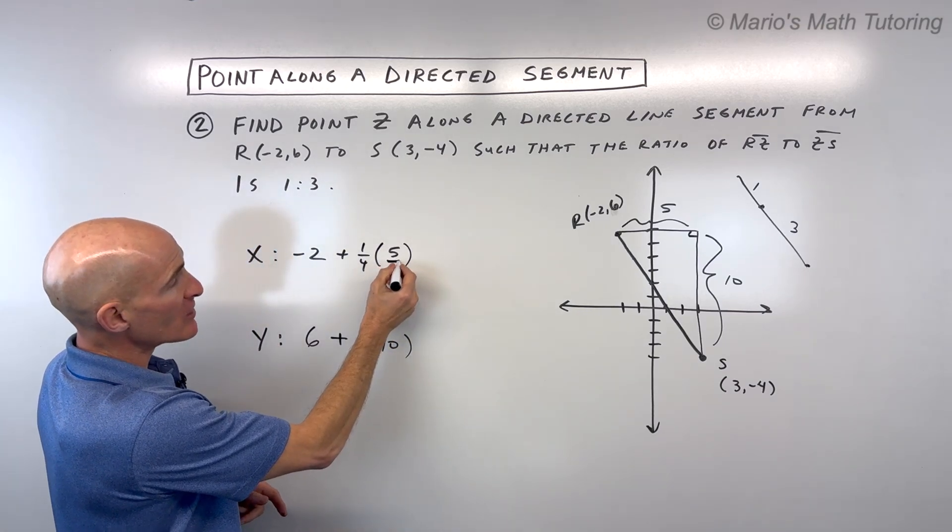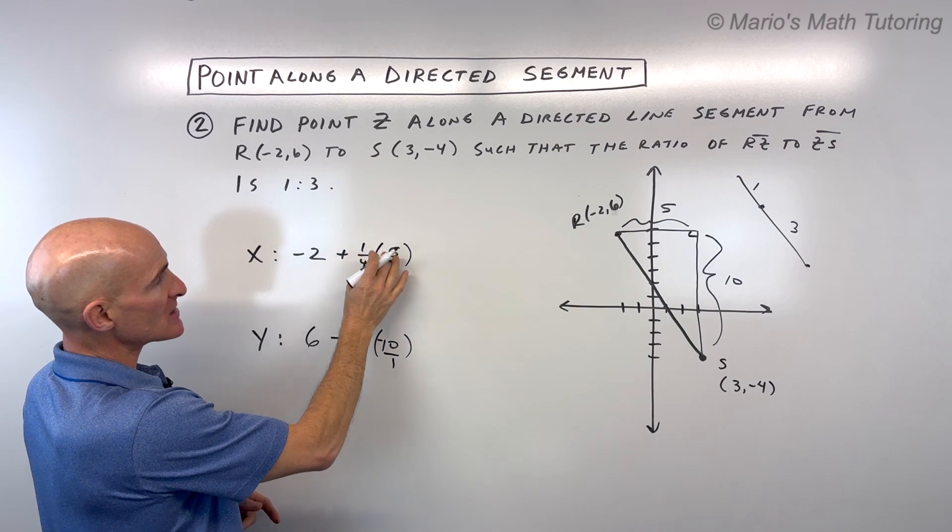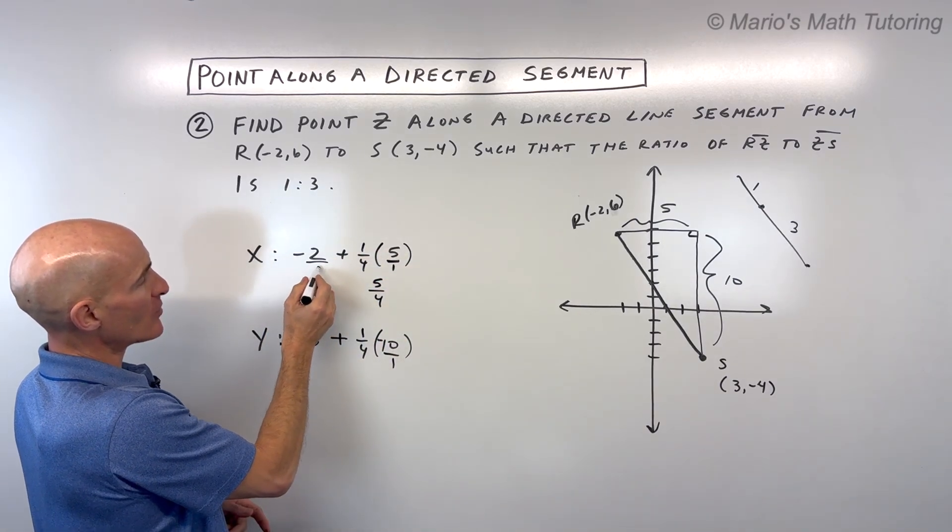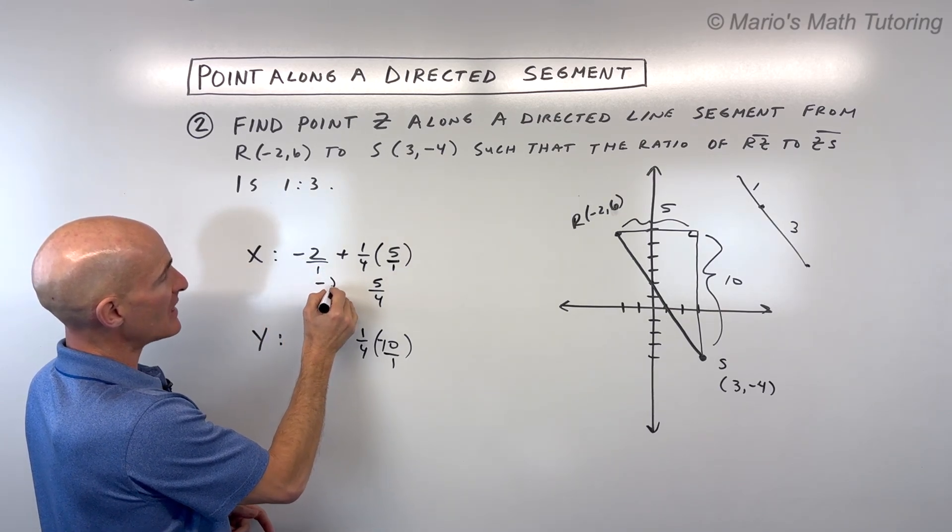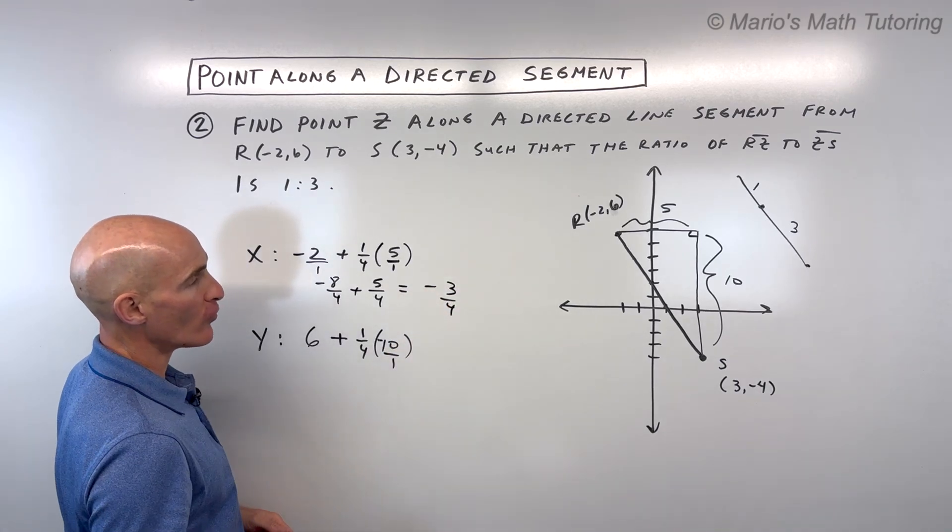Now, any whole number can be written as a fraction by putting it over 1. So you can use that to help you. This is 5 over 4. Negative 2 can be written as a fraction over 1. If we multiply the top and bottom by 4, that becomes negative 8 over 4 plus 5 over 4 is negative 3 over 4.